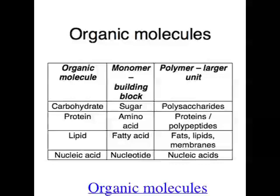The next class of organic molecule is nucleic acid — for example, DNA (deoxyribonucleic acid) or RNA (ribonucleic acid). DNA contains the elements carbon, hydrogen, oxygen, nitrogen, and phosphorus. The subunits of nucleic acids are called nucleotides. So that's a little bit about organic molecules.